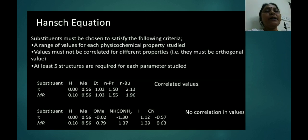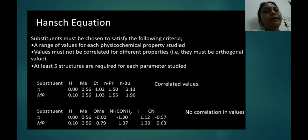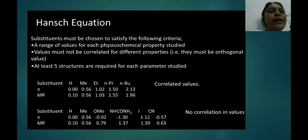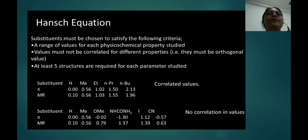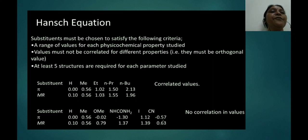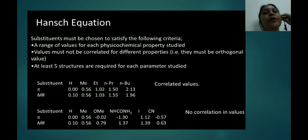To increase the activity of phenanthrene aminocarbinol, we must work on log P using a parabolic equation, use a hydrophobic substituent in ring Y, and use an electron-withdrawing substituent in ring Y. When choosing substituents for QSAR, they must satisfy the following criteria: a range of values for each physico-chemical property must be studied, and values must not be correlated for different properties.